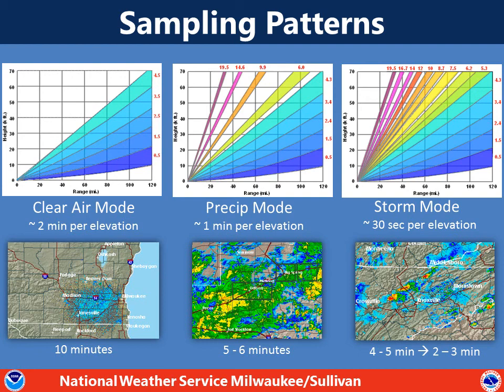It's also in a more sensitive mode, and this picks up on maybe more bugs and dust. Now when precipitation develops, such as showers or snow showers, then the radar automatically flips into precipitation mode, and it starts scanning just a little faster and a few higher elevation scans.